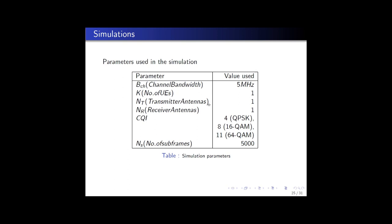Simulations were run for CQI values of 4, 8 and 11, corresponding to QPSK, 16QAM and 64QAM. The number of subframes was chosen to be 5000, which is a good enough number to achieve meaningful results.